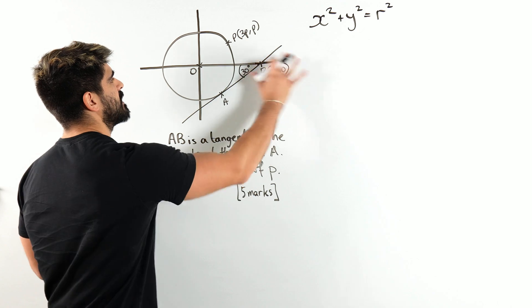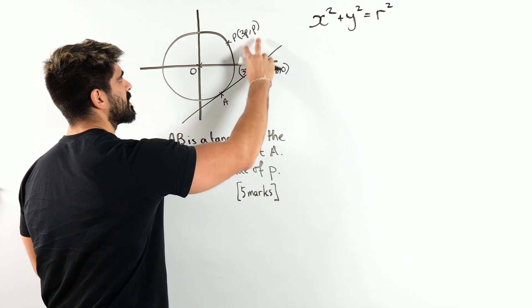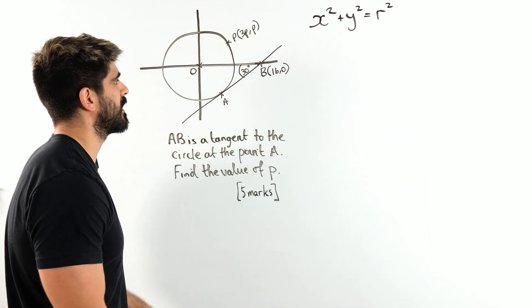Now we're going to have to use this information to work out what the radius is. And then we could sub in these coordinates here, and easy peasy, squeeze the lemon, we can work out what the value of P is.